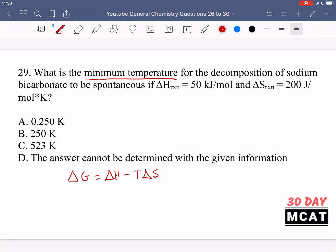We're asked for the minimum temperature for a reaction to be spontaneous and we're given a delta H and a delta S. If we have a reaction be spontaneous, that means that we have a delta G which is negative. So for it to be negative means it just needs to be something below zero.